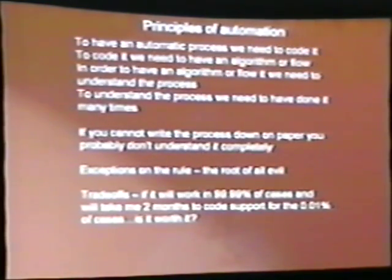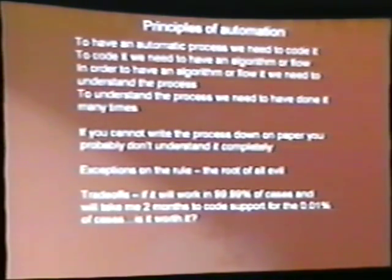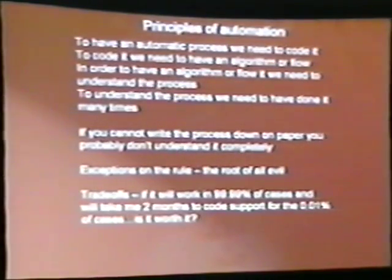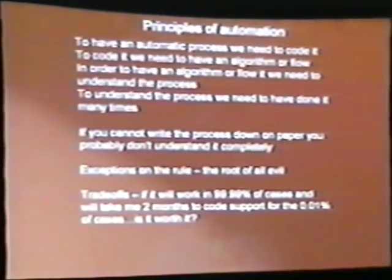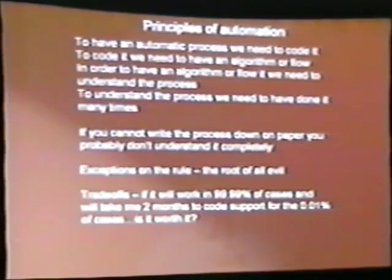If you want to automate something, you need to really understand how it works. In order to automate something, we have to create a machine — we need to code it — and in order to code it, we need some kind of algorithm. In order to build an algorithm, we need to be able to write it down on a piece of paper and say exactly what we're going to be doing. If you can't write it down in an algorithmic flow, you probably don't understand it exactly. If you can write something down in a flow or block chart, then you probably know exactly what's going on.